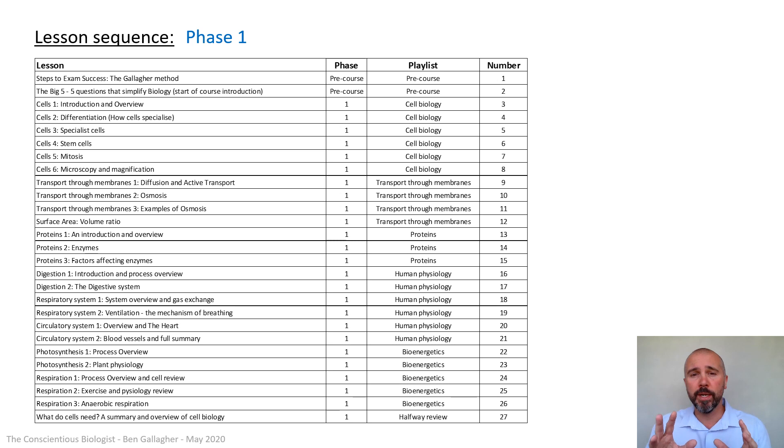If you look at the far column over there first, that's a list of all of the videos that I've made that go into phase one. Now the first two are the pre-course ones. So if you just look across at the next column now, the one that says phase, you'll see that those first two under phase have got pre-course. So I'm hoping you've already gone and watched the Steps to Exam Success, the Gallagher Method video. If you haven't, go to that one next, but it's quite important that you watch the Steps to Success one and this one, the Big Five, to give you a really good start to how you're going to use your course. That Steps to Exam Success one is basically about the science behind learning.